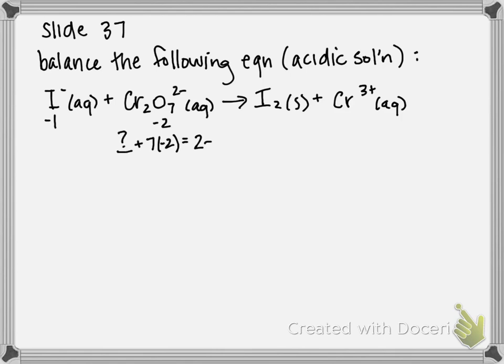So whatever number we get here, we're going to have to divide by two so that it's only accounting for the oxidation number of one chromium. So seven times negative two is negative 14. Trying to add up to two minus.